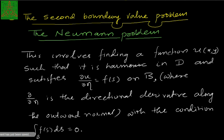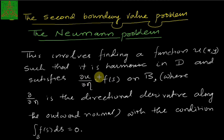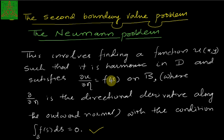The next type of problem is known as the Neumann problem. The Neumann problem is to find a function u that is harmonic in some region D — the interior of a simple closed smooth curve — with the condition that ∂u/∂n = f on the boundary, where ∂/∂n denotes the directional derivative along the outward normal. The necessary and sufficient condition for the Neumann problem to have a solution is that the integral of f(s) over the boundary equals zero.